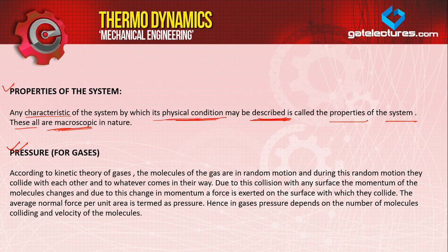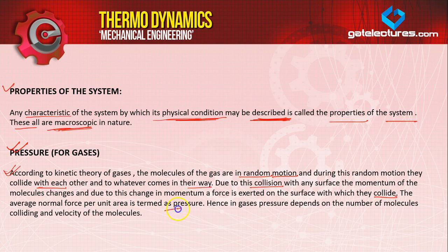According to the kinetic theory of gases — which you would have studied in 11th standard — the molecules of gas are in random motion. During this random motion, they collide with each other and with whatever comes in their way. Due to this collision with any surface, the momentum of the molecules changes. Due to this change in momentum, a force is exerted on the surface with which they collide. The average normal force per unit area is termed as pressure. Hence in gases, pressure depends on the number of molecules colliding and the velocity of the molecules.